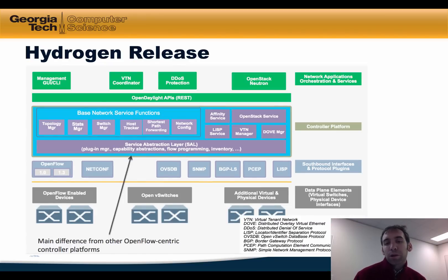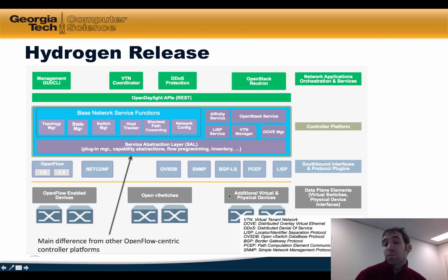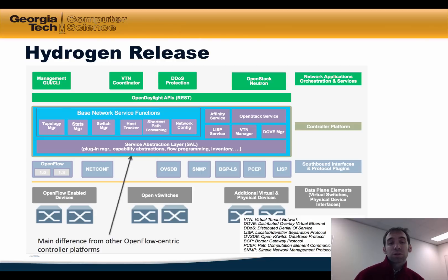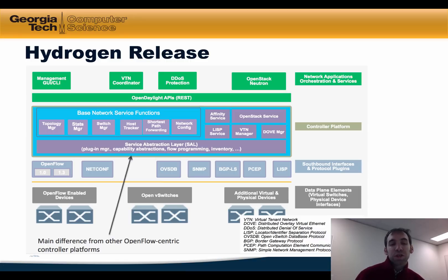Here's an illustration of the OpenDaylight controller release called Hydrogen. At the very bottom of the architecture, we have OpenFlow-enabled switches, Open vSwitches or software switches, and other virtual and physical devices and data plane elements. It's important to note that these need not be OpenFlow switches. When you look at the southbound interfaces that OpenDaylight supports, OpenFlow is just one of them. It also supports many others, including NetConf and OVSDB, as well as more conventional network management and configuration protocols. OpenDaylight provides what's called a Service Abstraction Layer, which abstracts these southbound interfaces from the modules provided by the controller platform. This SAL is the main difference between OpenDaylight and more OpenFlow-centric controller platforms.